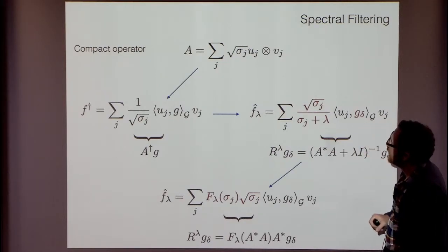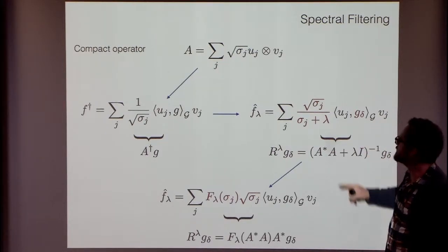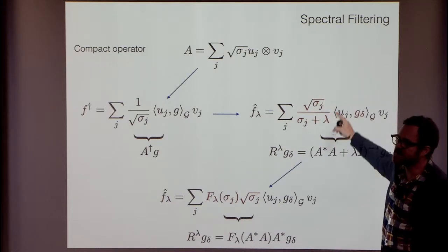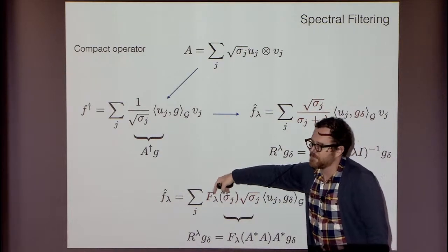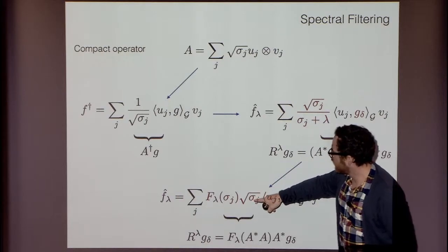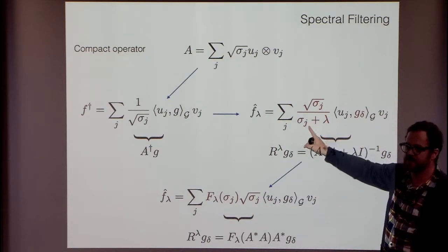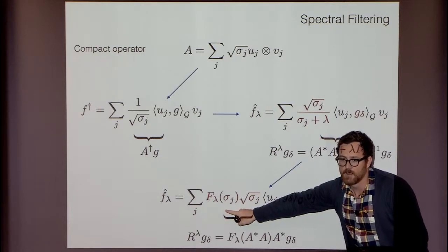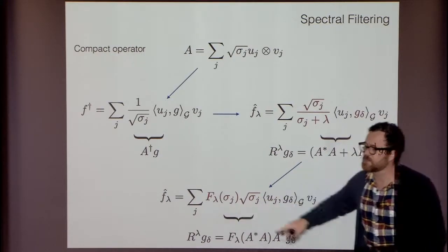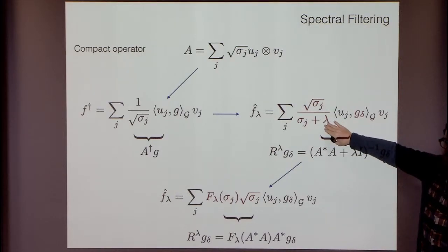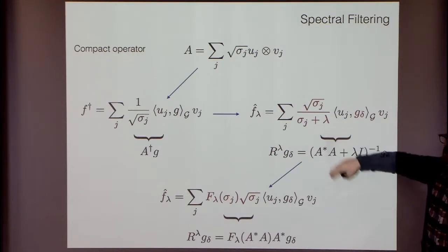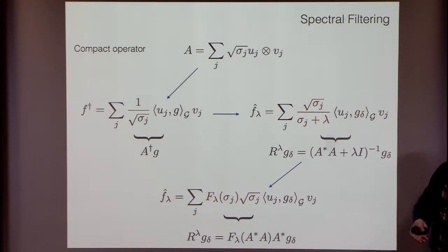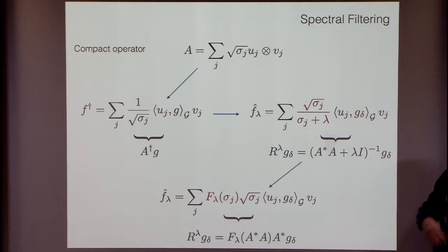The idea of spectral filtering regularization: replace the Tikhonov filter with another filter function f_lambda. The filter function should behave roughly like 1/(σ + λ). The question is: are there other interesting filter functions? What do they correspond to computationally? What kind of algorithms with what guarantees can you derive?